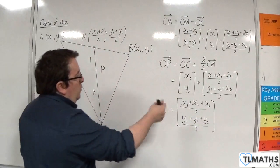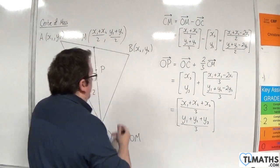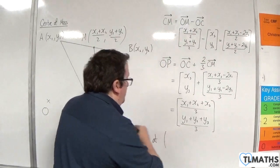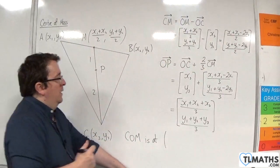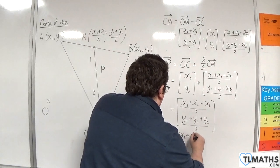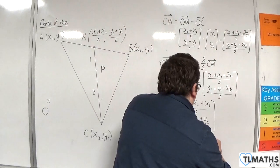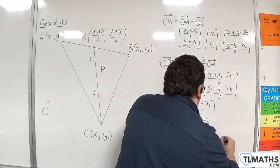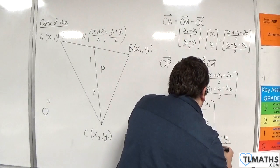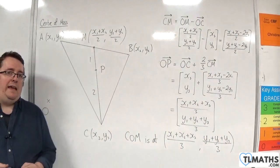Now, that's really easy to work with. Because now, the centre of mass, so the point P, and this is the centre of mass of any triangle, would actually be just the average of the X coordinates and the average of the Y coordinates.